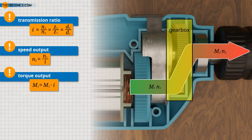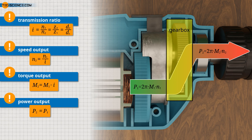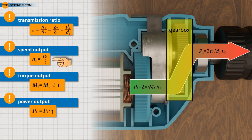For a given transmission ratio, the change in speed and torque can be determined accordingly. In an ideal case, the power at the output of the transmission equals the power at the input. In practice, friction causes a loss of power, taken into account by a transmission efficiency factor. For spur gears, the efficiency is about 95%. Power losses also affect the torque at the output shaft — since power and torque are directly proportional, a reduction in power means a reduction in torque to the same extent. The efficiency factor must therefore be taken into account when calculating the output torque.